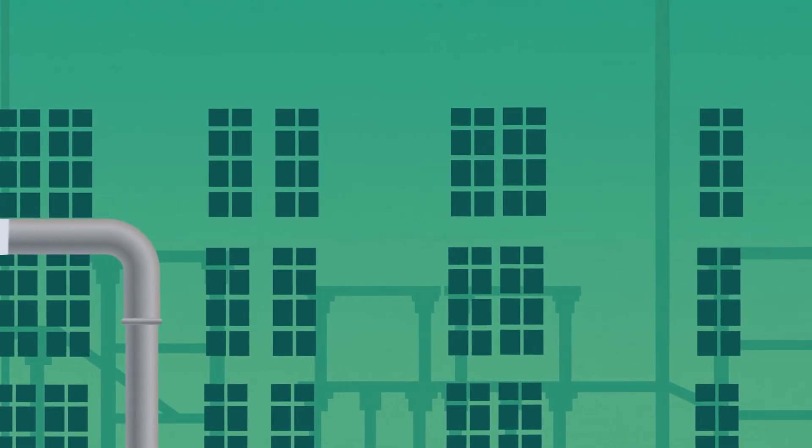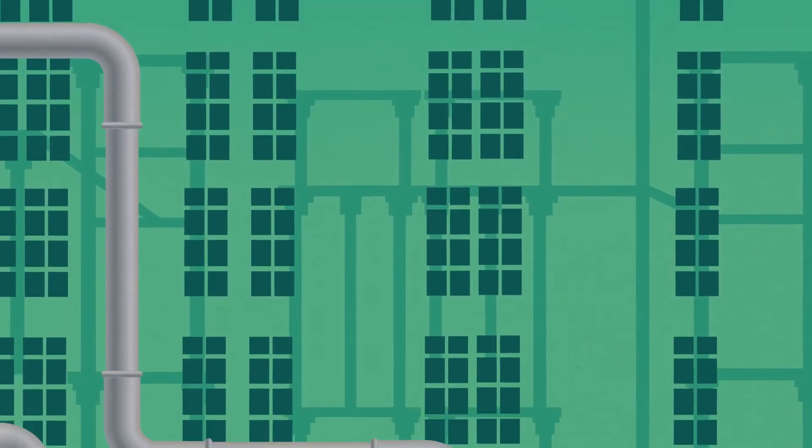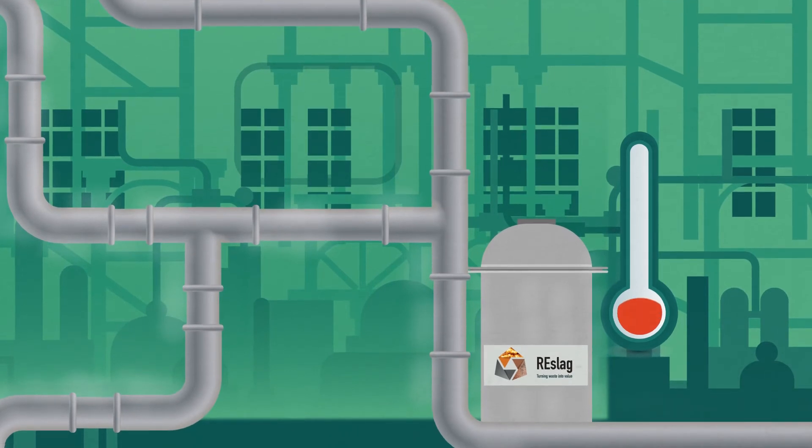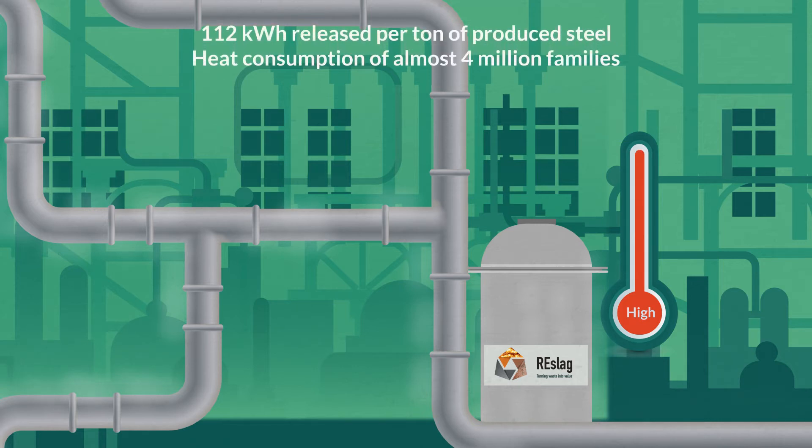As heat storage material in the steel industry to recover energy from exhaust gases during steel production. 112 kilowatt hours are released in the form of high temperature gases per ton of produced steel. Considering the yearly steel production in the European Union, this energy is similar to the heat consumption of almost four million families.